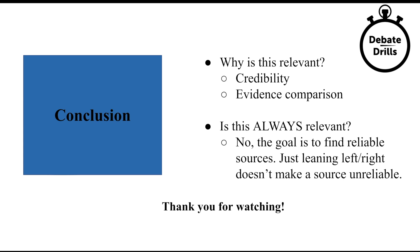So why is this relevant? The reason is credibility. First, you want to maintain your own credibility in the debate space as someone who reads good evidence and has good research practices — not taking false information and evaluating your sources with a careful eye. Second, it's for evidence comparison: you want to be able to say your sources are more credible and more qualified than your opponent's so the judge should vote for you. But is this always relevant? No — the goal is just to find reliable sources. Just because a source is left-leaning or right-leaning doesn't automatically make it unreliable. Opinion is often necessary when finding evidence for debate rounds, but make sure the opinion has some evidence to back it up. Thank you so much for watching and I hope this was helpful.